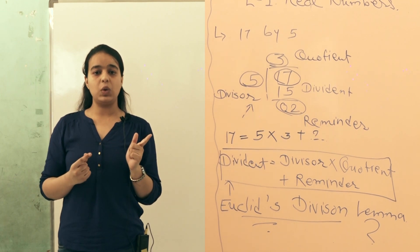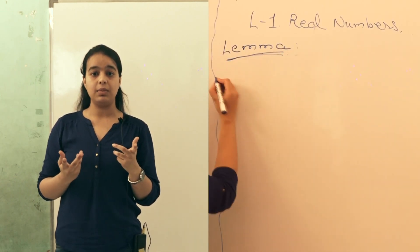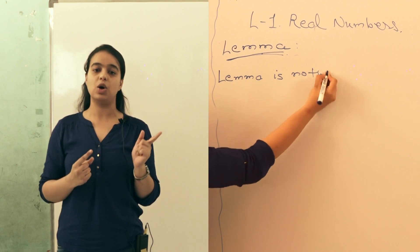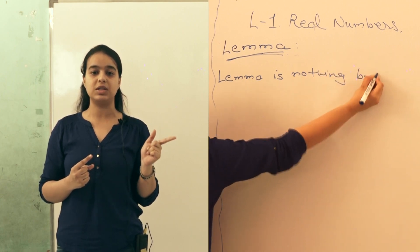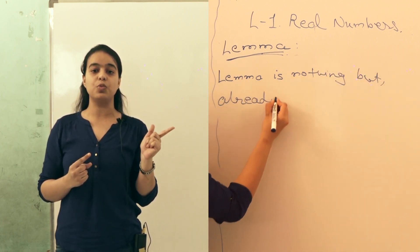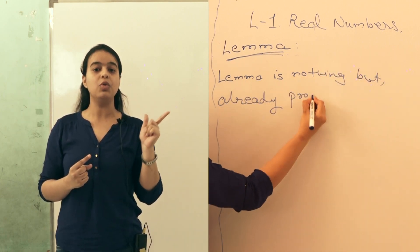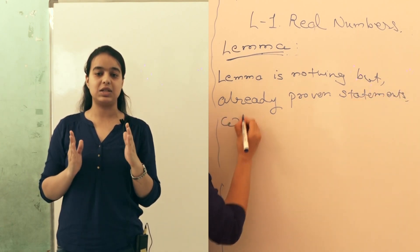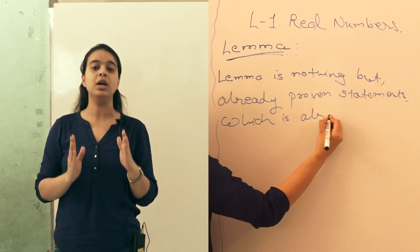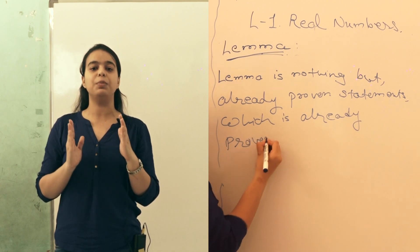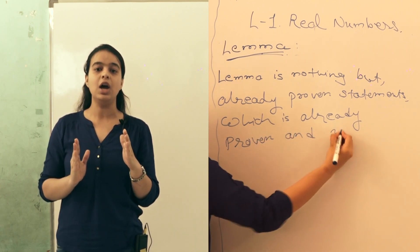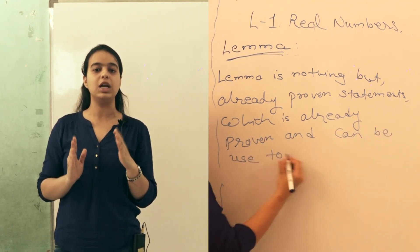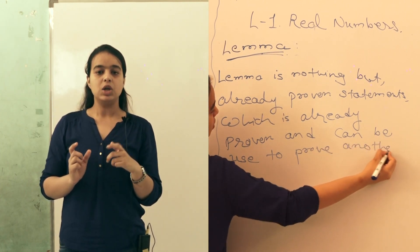Now the question arises: what is a lemma? A lemma is nothing but an already proven statement that can be used to prove another statement. Lemma kuch nahi hai — lemma statements hote hai, aise statements jo already mathematically proven hote hai aur jo hum doosre statements ko prove karne ke liye use kar sakte hai.